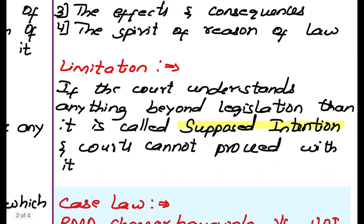Limitation in interpreting a legislature: if the court understands anything beyond the legislation, then it is called supposed intention, and courts cannot proceed with it. Courts cannot interpret beyond that legislation — they have to interpret within the scope of that legislation. If they go beyond, it is called supposed intention.